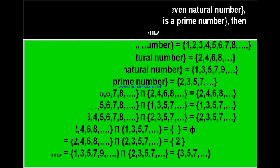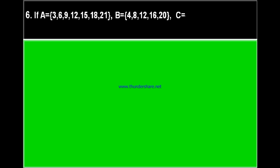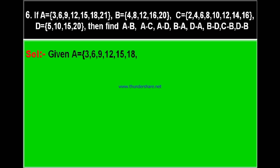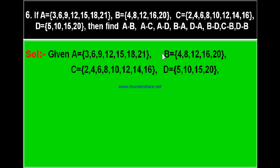Now question number 6. A = {3, 6, 9, 12, 15, 18, 21}, B = {4, 8, 12, 16, 20}, C = {2, 4, 6, 8, 10, 12, 14, 16}, and D = {5, 10, 15, 20}. Find A−B, A−C, A−D, B−A, B−D, C−B, and D−B. Here is the solution with all four sets written out.